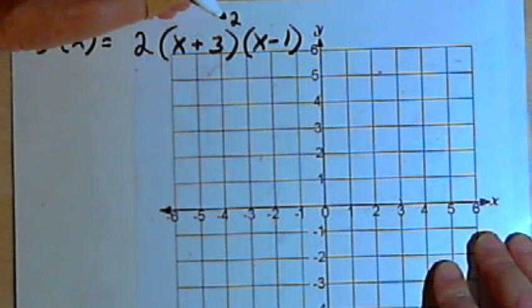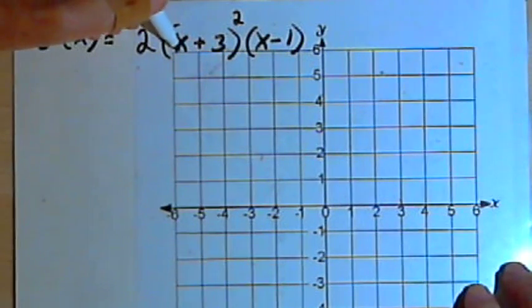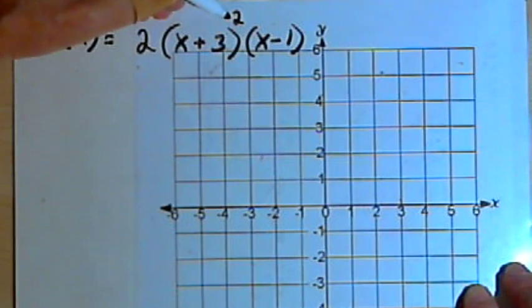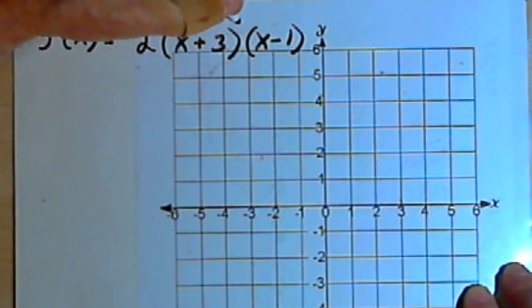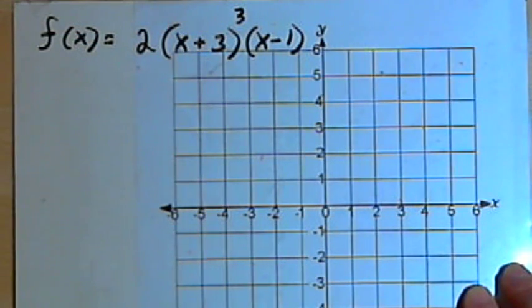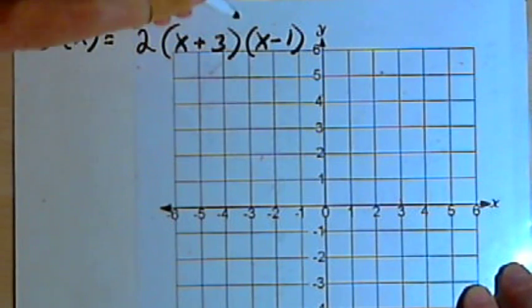I've got f(x) equals 2 times (x+3) squared times (x-1). This square over here, the second power, means that the factor x plus 3 has what we call a multiplicity of 2. If instead of the 2, if I had x plus 3 to the third power, we'd say it had a multiplicity of 3. If it was a 4, it would be a multiplicity of 4 and so on. Let's go back to that multiplicity of 2.